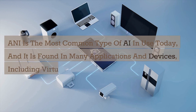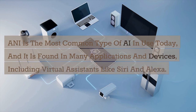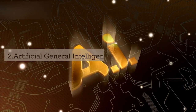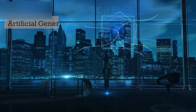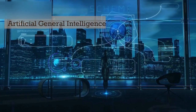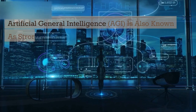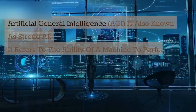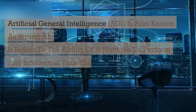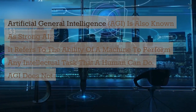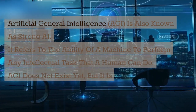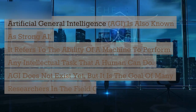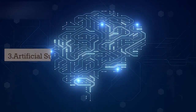ANI is found in devices including virtual assistants like Siri and Alexa. Two: Artificial General Intelligence (AGI), also known as strong AI. It refers to the ability of a machine to perform any intellectual task that a human can do. AGI does not exist yet, but it is the goal of many researchers in the field of AI.